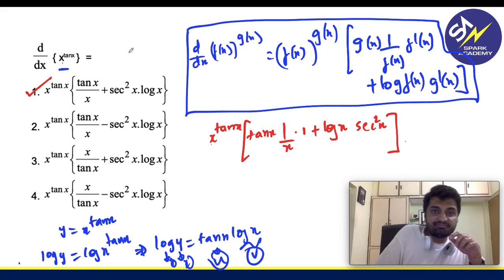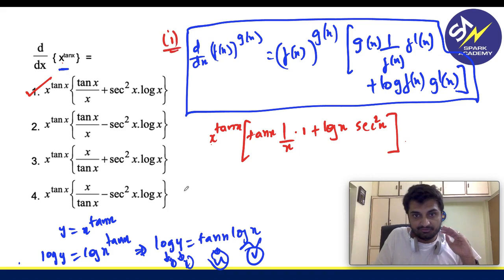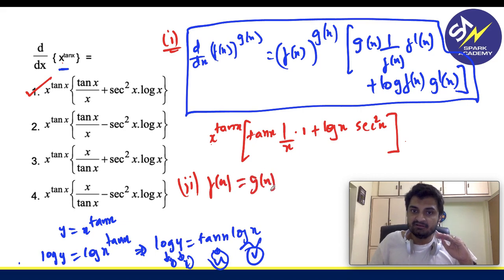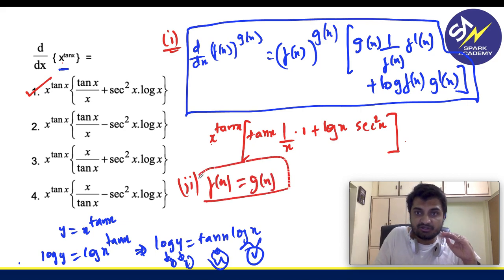So this is the first condition when base and power are different. What if the base is equal to the power? If f of x is equal to g of x, what will happen is these two will get cancelled and you will only get it as f dash x and g dash x. So these two will be same.